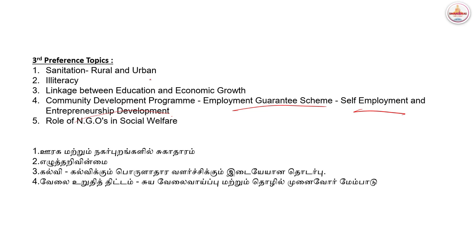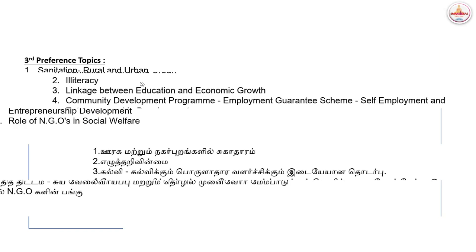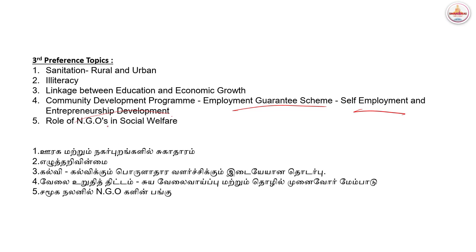The third preference topics include sanitation, literacy, education, and economic growth.